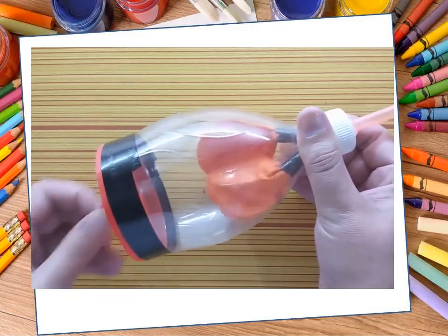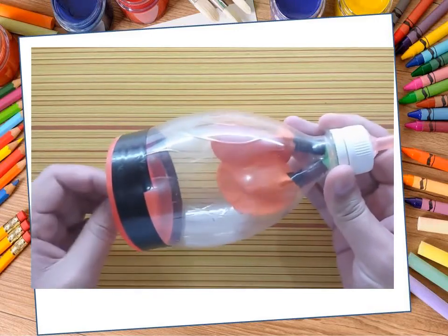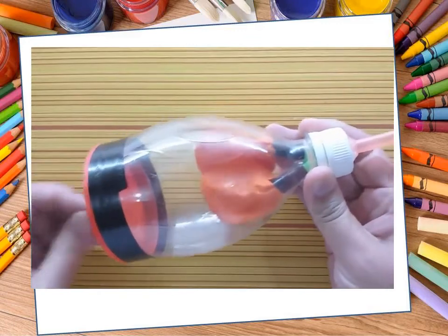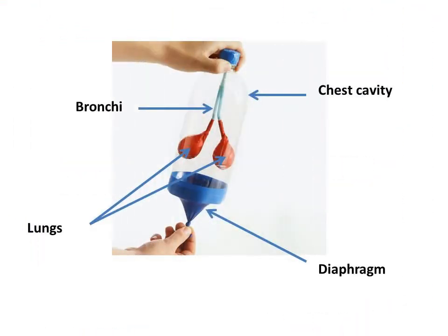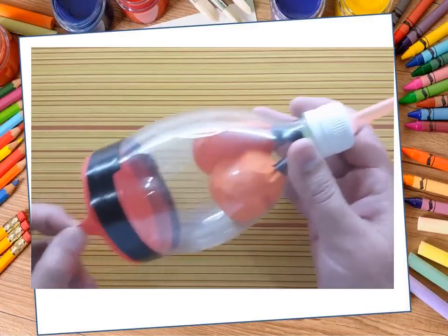Let us answer the following questions. What do you think does each part of the constructed lung model represent? You are correct. The two-liter plastic bottle represents the chest cavity, two straws represent the bronchi, two balloons represent the lungs, and the larger balloon represents the diaphragm. What happens as I pull down the balloon at the bottom of the bottle?